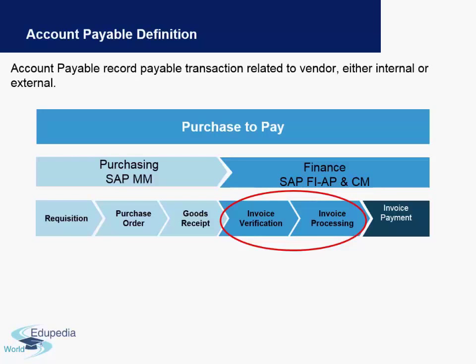Once the goods are received from the vendor, there will be an invoice verification process. An invoice is sent and recorded in the system either automatically or manually by the organization. Once this invoice has been processed in the system, the last stage will be the payment which you have to make to the vendor.